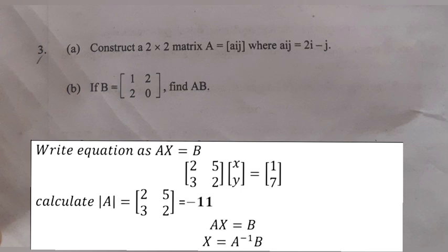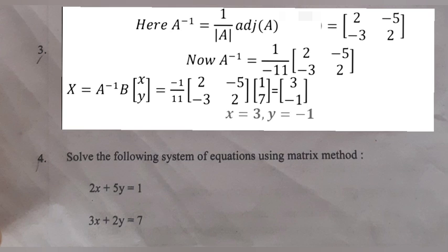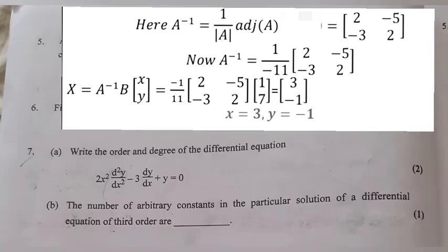Since AX = B, therefore X = A⁻¹B. Here A⁻¹ = (1/det A) × adjA = (1/−11) × [[2, −5], [−3, 2]]. Now X = A⁻¹B = (−1/11) × [[2, −5], [−3, 2]] × [1, 7]ᵀ = [3, −1]ᵀ. That is, x = 3 and y = −1.